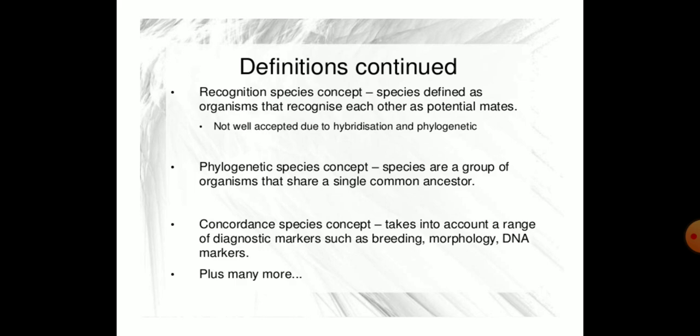There are different types of species concepts, including the phylogenetic species concept. We should understand that species are defined as groups of organisms that share a single common ancestor, based on morphological characters and shared traits.